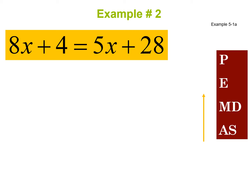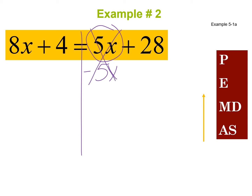Let's look at another example. Drawing my line at the equal sign. On the left-hand side, 8x plus 4 — those are not like terms, so I can't combine them. On the right-hand side, 5x plus 28 — also not like terms. So I start moving things from side to side. I want the variable on the left, so I subtract 5x from both sides. That cancels on the right, and 8x minus 5x gives me 3x. So I have 3x plus 4 equals 28.